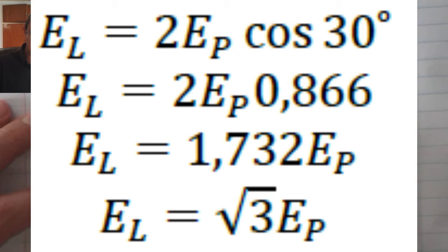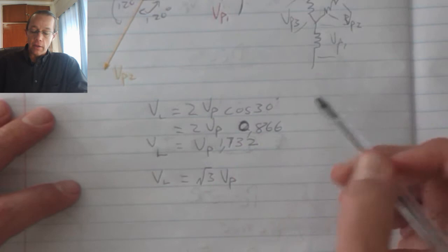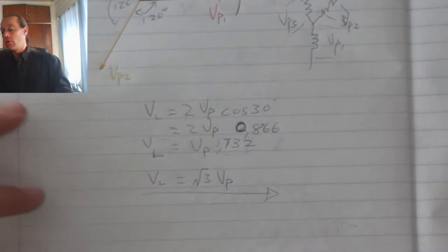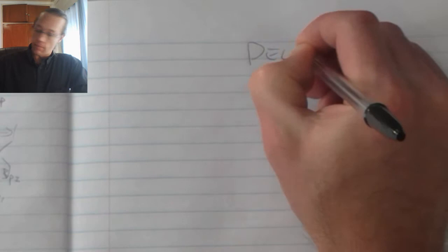So as a result, the line voltage is equal to the square root of three multiplied by my phase voltage. That is where this formula comes from. When I get to the delta configuration...